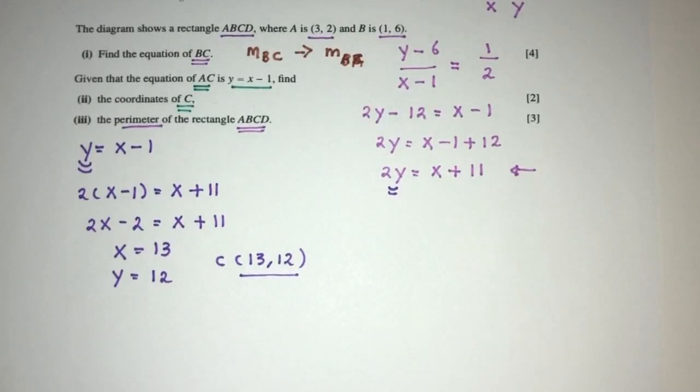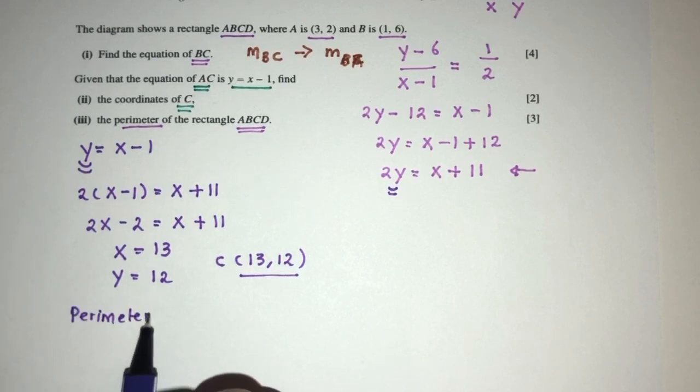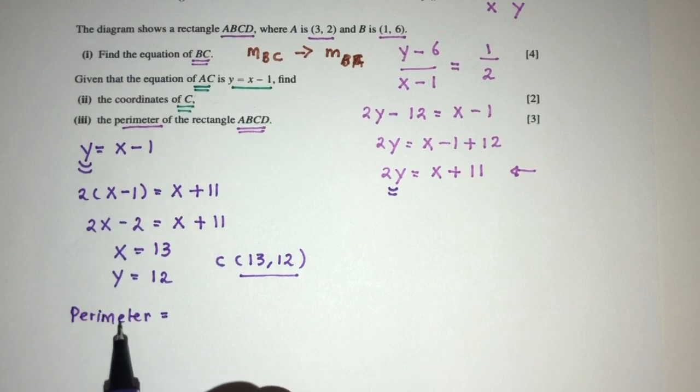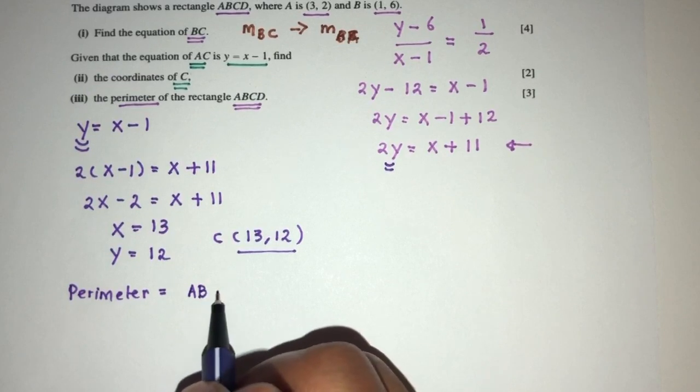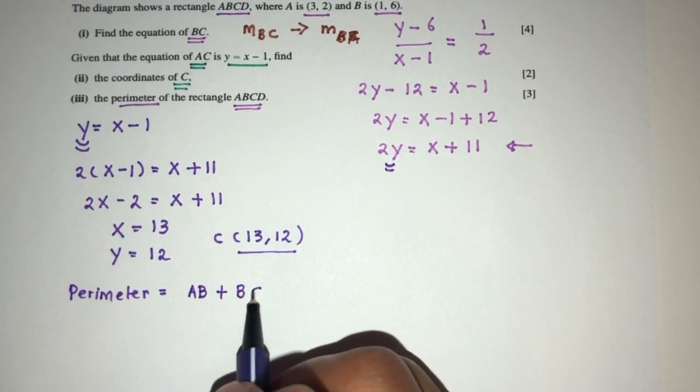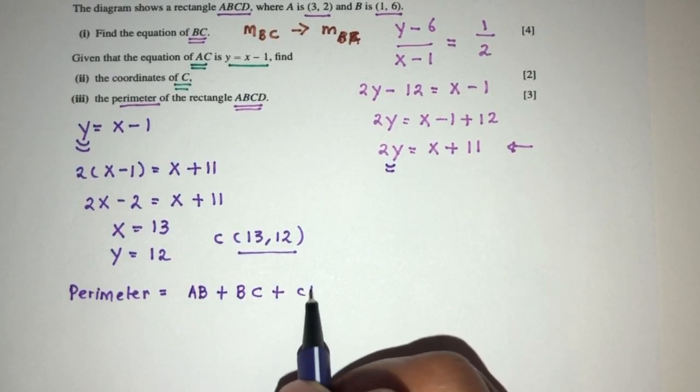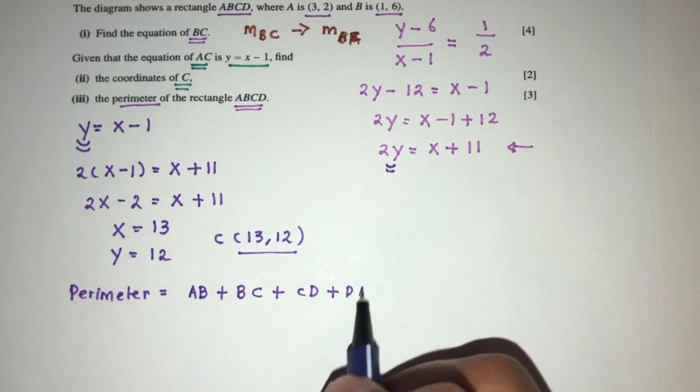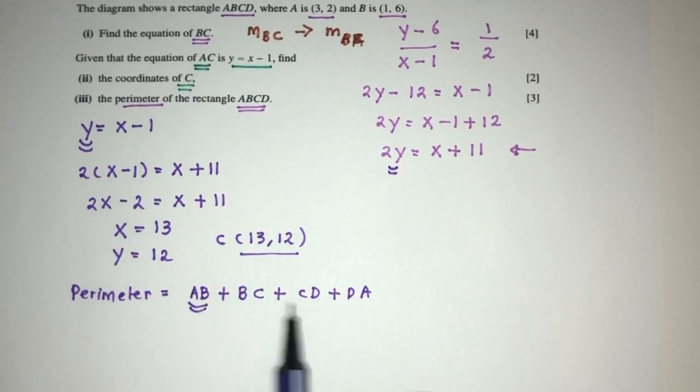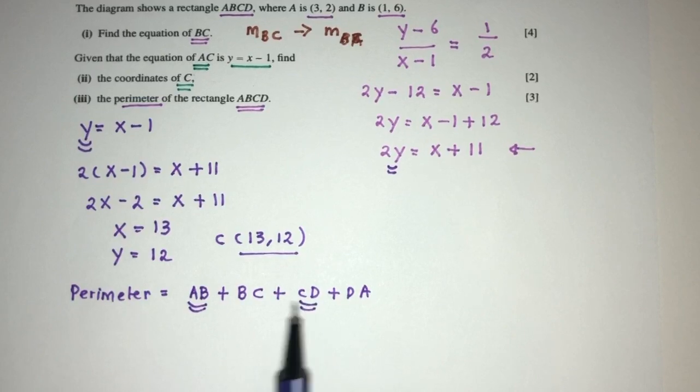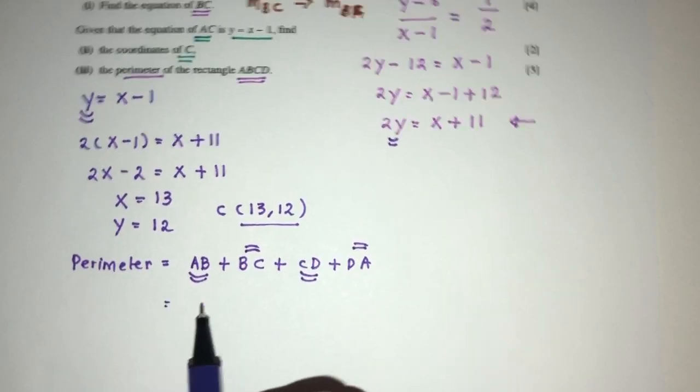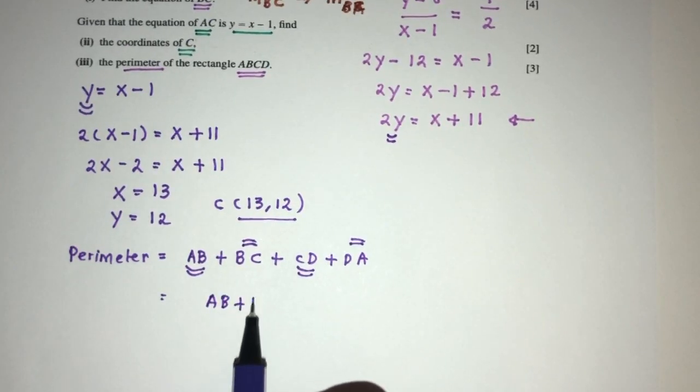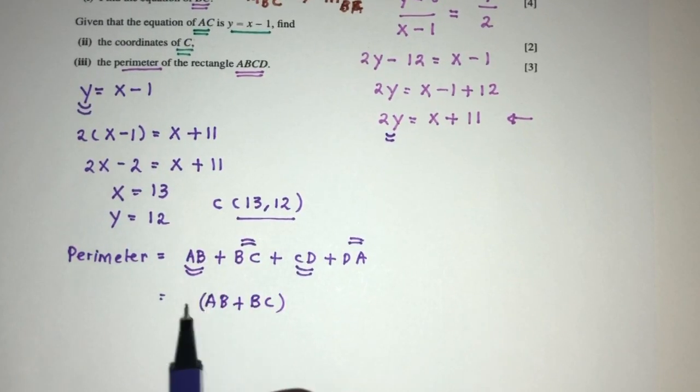So let's first find the length of AB. The perimeter is simply the distance around the object. So we know that it is a rectangle and we know that AB plus BC plus CD plus DA. However, we know that AB is the same as CD and BC is the same as DA. So what we can do is we can just take AB plus BC and then multiply by 2.